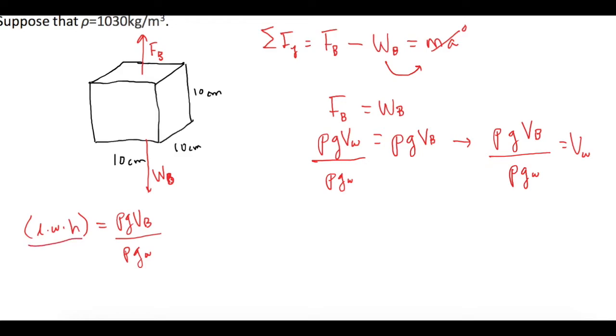Now we're going to divide over the length times width of the volume displaced, which will be the same as the block because the block is the one displacing it. So it's 10 times 10 centimeters, so 100 centimeters squared. That gives us height is equal to ρ g times the volume of the block divided by ρ g of the water times the area of the bottom of the block or length times width.